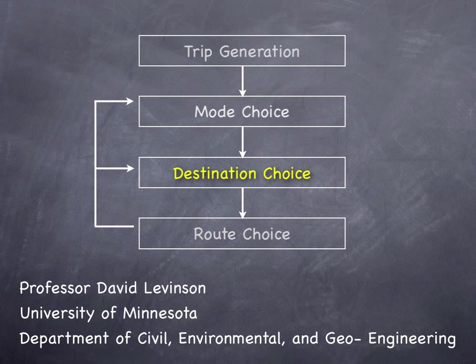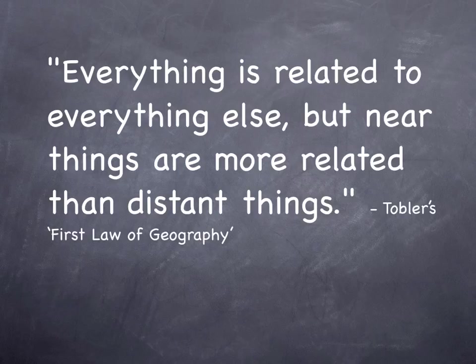The next step of the transportation planning model is destination choice. We know how many trips are coming out of every zone and how many trips are going to every zone. We want to know how many of the trips coming out of each zone are going to each other zone — we want to match these two.